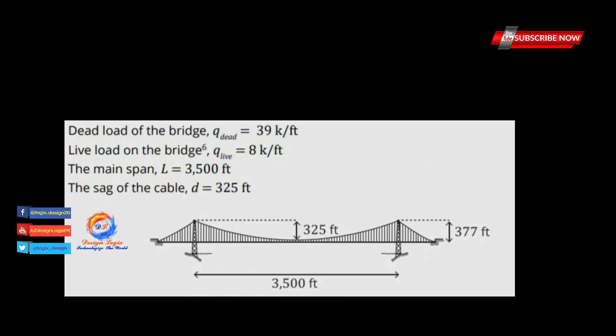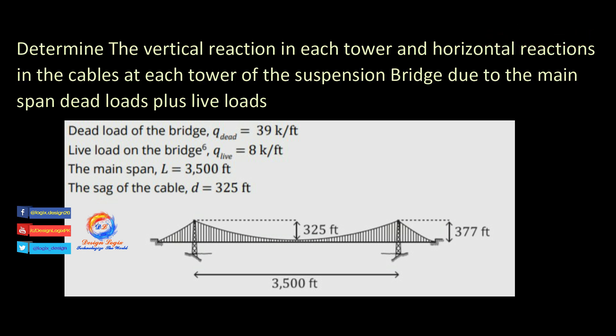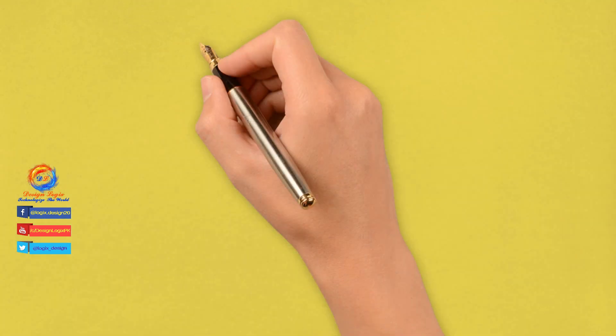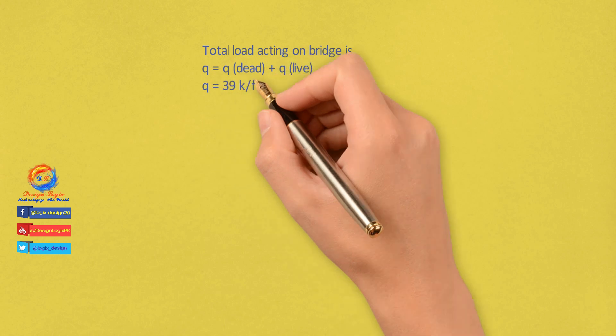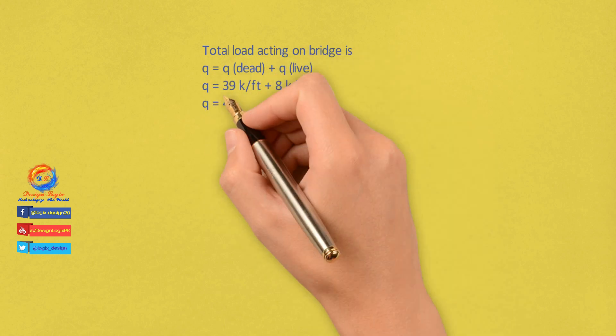Let's now solve an example to calculate main span tower reactions. Determine the vertical reaction at each tower and horizontal reactions in the cables at each tower of the suspension bridge due to main span dead loads plus live loads. Dead load of the bridge = 39 kip per foot; live load = 8 kip per foot; main span length = 3500 feet; sag of cable = 325 feet. Total load q = 39 + 8 = 47 kip per foot.